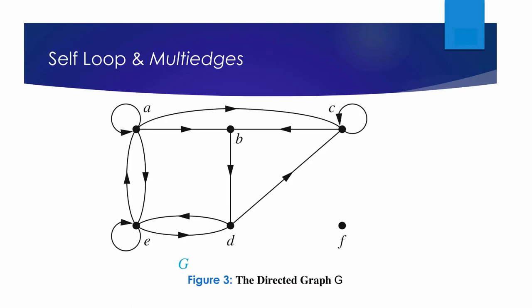Simple graphs do not have any self-loops, since an edge is defined to be a set of two vertices. In addition, there is at most one edge between any pair of vertices in a simple graph. In other words, a simple graph does not contain multi-edges or multiple edges, because E is a set. Most importantly, simple graphs do not contain directed edges.